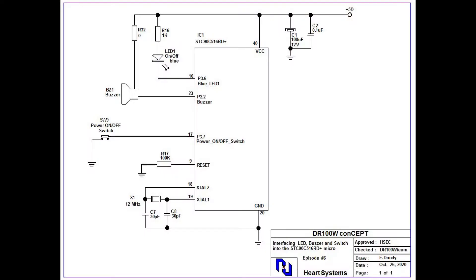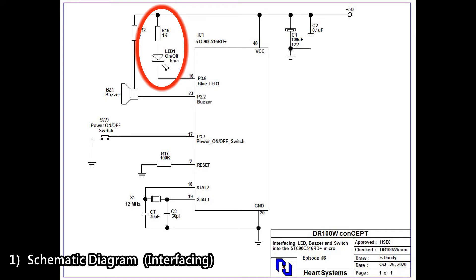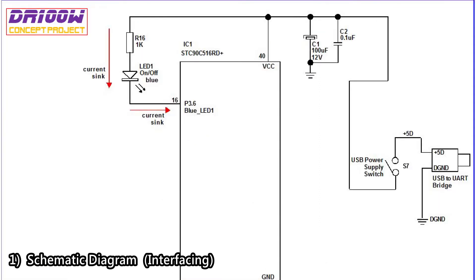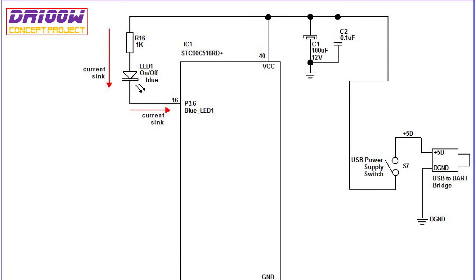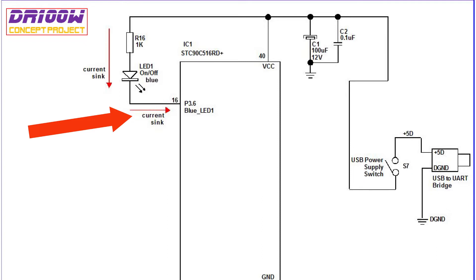Our basic starter hardware discussed in episode 4 is composed only of an LED connected in current sink mode at port P3.6. This configuration was chosen to be compatible with other standard 8051 core derivatives like Atmel, Megawin, and other 8051 cores, wherein the micro can only sink current — current can only go inside the micro and it cannot source current to drive the LED.